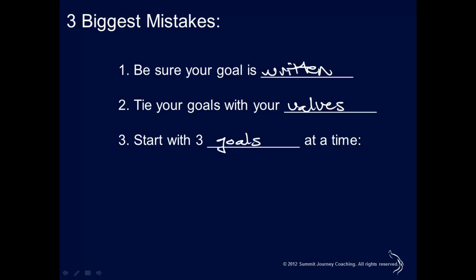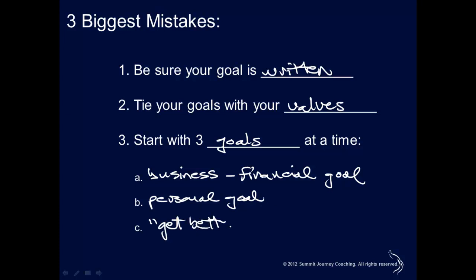And we like the idea of having three types of goals. The first type would be a business goal, or if you're not in business, maybe just a financial goal, money related goal. So that's one type. A second type would be a personal goal, something just for you or about you. And the third type of goal we call a get better at something goal. What is it that you would like to get better at and set that as a goal?